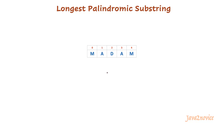There is another approach. Take two pointers called left and right. Find the mid position of the given input string — index 2 is the mid position here. Now make both left and right pointers point at the midpoint. This is L and this is R. Now compare the characters at both left and right pointers. Since both pointers are pointing at the same index, it is the same character.